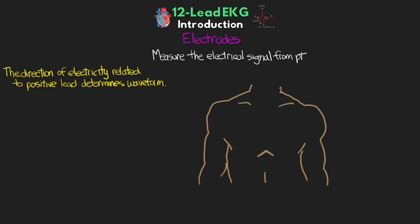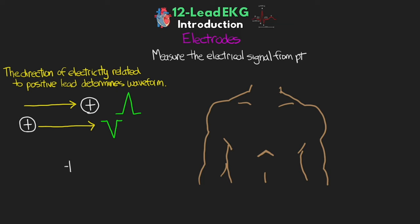The direction of electricity in relation to where the positive lead is determines how we see the waveform. If electrical activity is moving towards a positive electrode, we see a positive or upright waveform. If electricity is moving away from a positive electrode, we see a negative or downward waveform. If electrical activity is traveling perpendicular to the positive electrode, we get a biphasic waveform — perfectly perpendicular gives an equiphasic or isoelectric waveform, while shifting the angle changes the relative size of the positive and negative deflections.